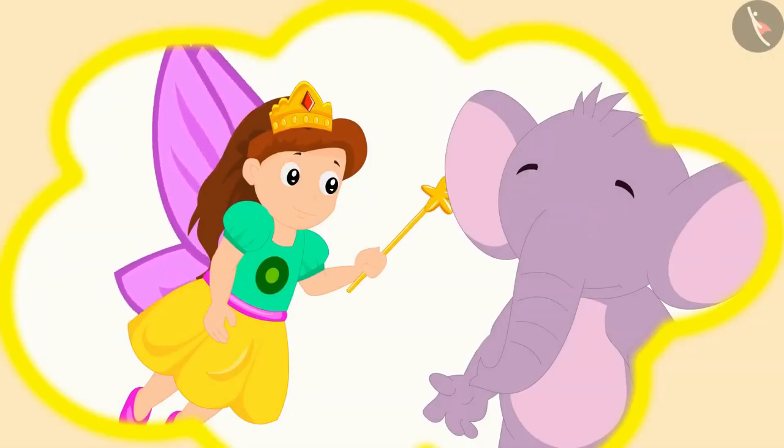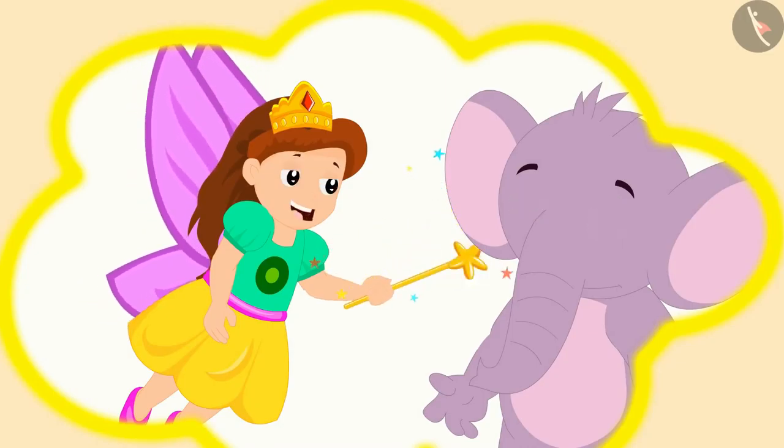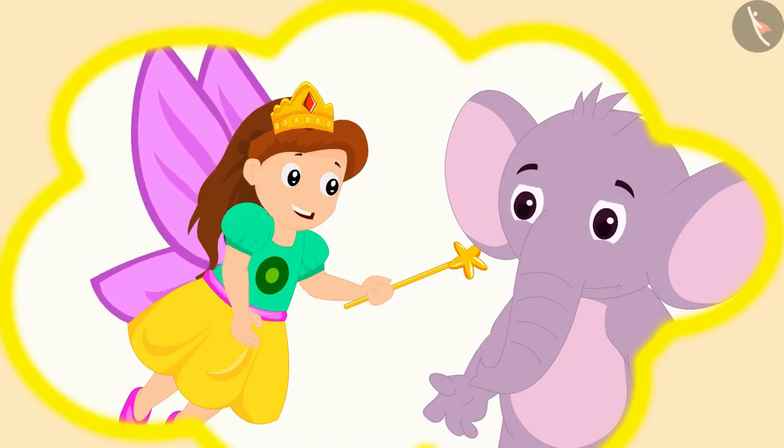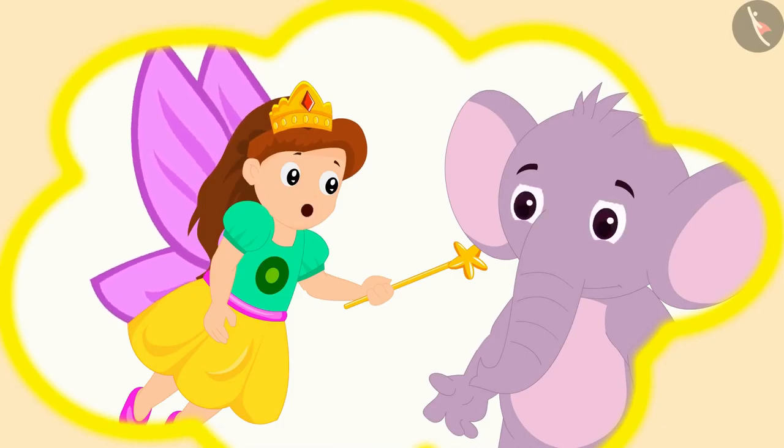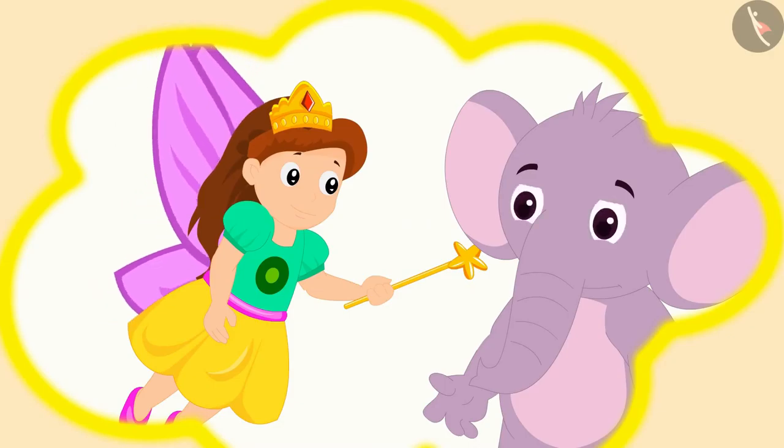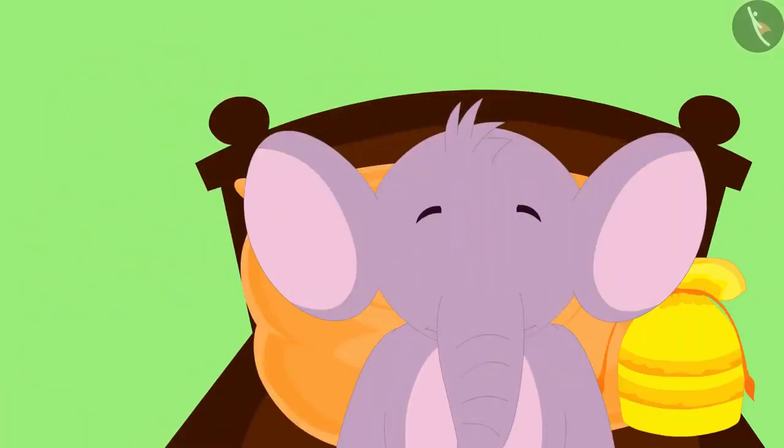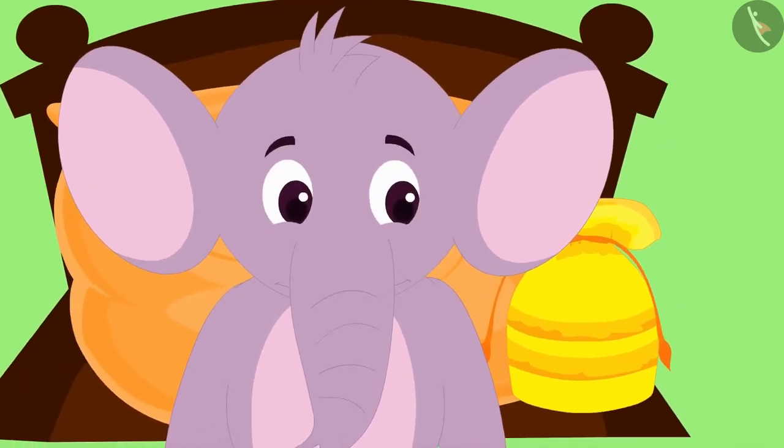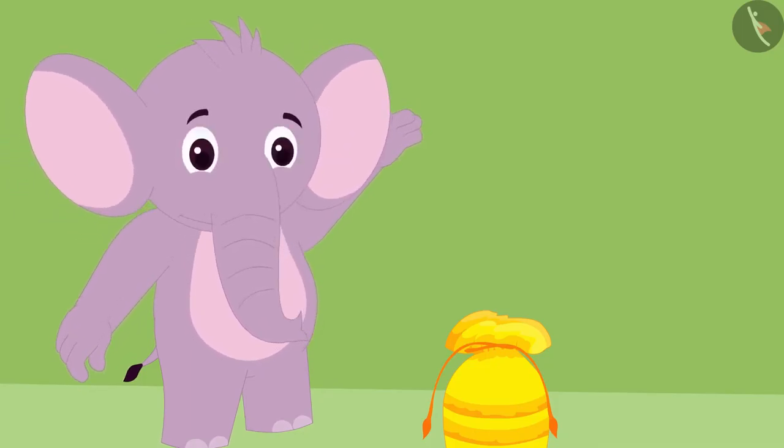The angel said to Appu, well done Appu. This answer of yours is also right. When you wake up in the morning, you will get your gift at your bedside. Saying this, the angel disappeared from Appu's dream. When Appu awoke from sleep in the morning, he saw that there were some golden coins in a bundle at his bedside. Appu started dancing happily.